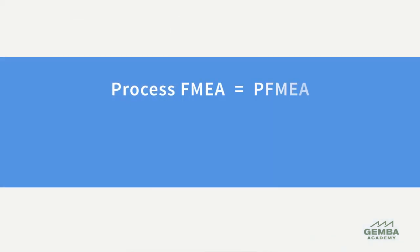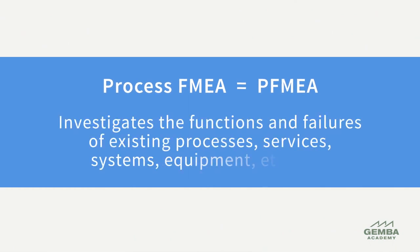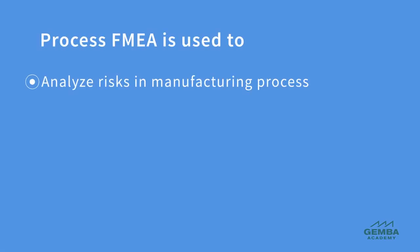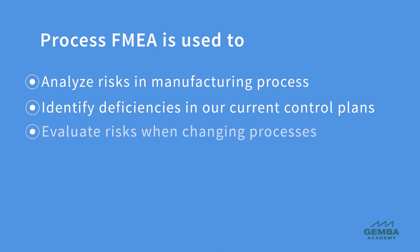The process FMEA, abbreviated PFMEA, investigates the functions and failures of existing processes, services, systems, equipment, etc. The process FMEA is used to analyze new and existing manufacturing processes, to identify deficiencies in our current control plans, to evaluate risks when making changes to our processes, and more.